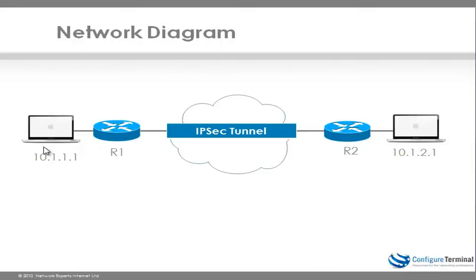We're going to have a LAN on the left hand side of 10.1.1.0. In the demonstration I'll just represent this as a loopback on the router, and then on the right hand side we've got another subnet 10.1.2.0. So we're going to set up an IPsec VPN allowing traffic between these two subnets to be encrypted across an IPsec VPN.